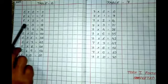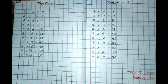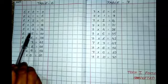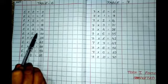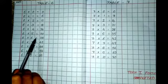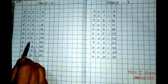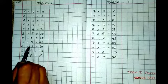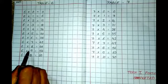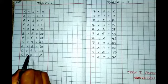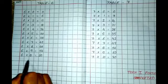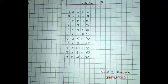6 zeros are 0, 6 ones are 6, 6 twos are 12, 6 threes are 18, 6 fours are 24, 6 fives are 30, 6 sixes are 36, 6 sevens are 42, 6 eights are 48, 6 nines are 54, 6 tens are 60.